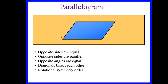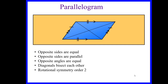A parallelogram has opposite sides that are equal — shown by the tick marks — and opposite sides that are parallel — shown by the arrows. The opposite angles are equal: the angle here and here are the same, and here and here are the same. The diagonals bisect each other — though the diagonals are different in length, they meet halfway along each. And it has rotational symmetry of order two: if you put a pin in the centre and spin the shape, it looks the same in two positions every 180 degrees.